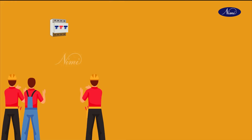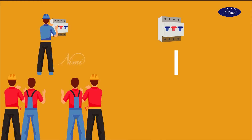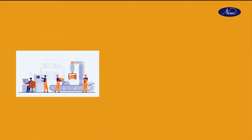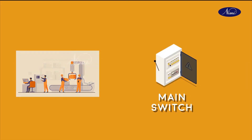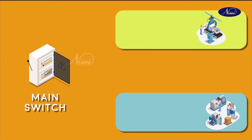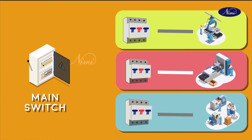Every person in the workplace should know the correct sub-main switches which control the particular area where the victim remains. In industries or workplaces, the total wiring is controlled by a main switch and the different areas will be controlled by different numbers of sub-main switches.